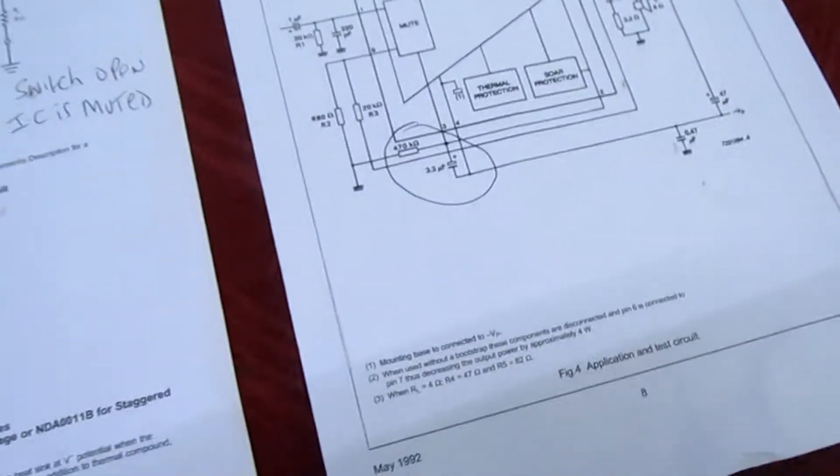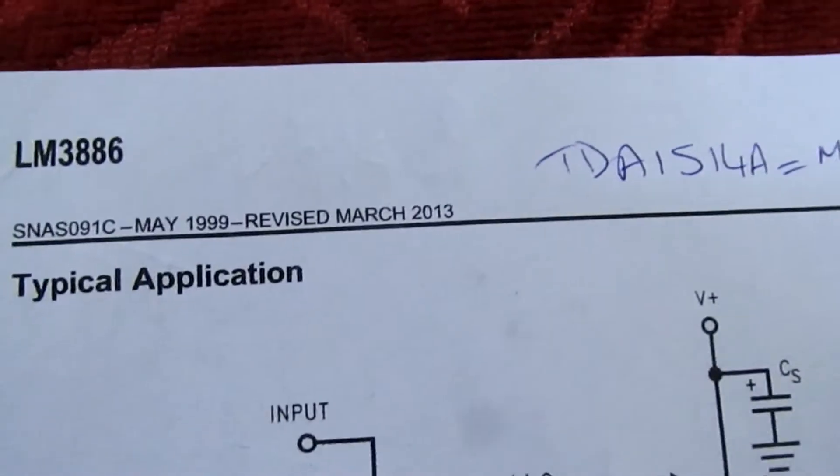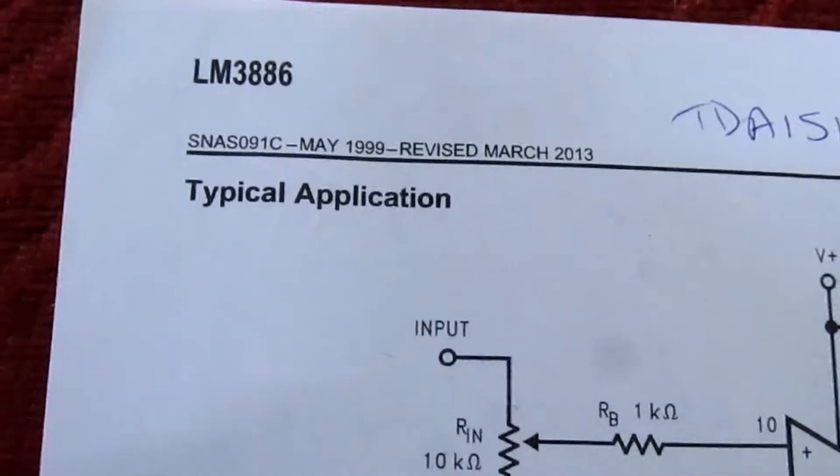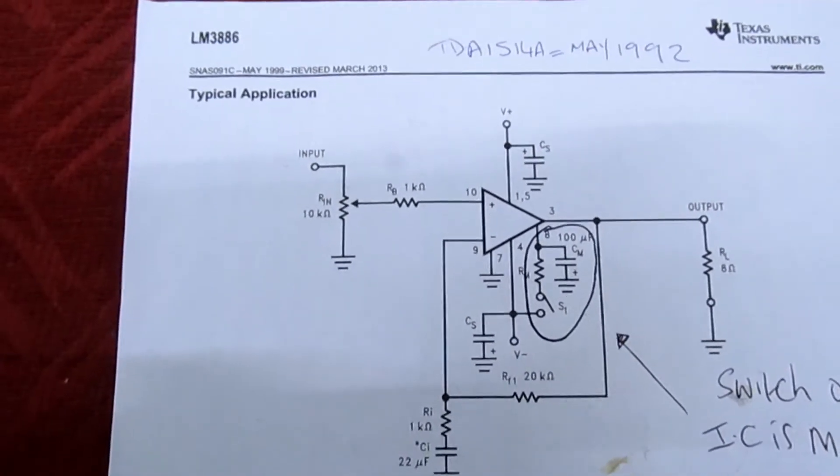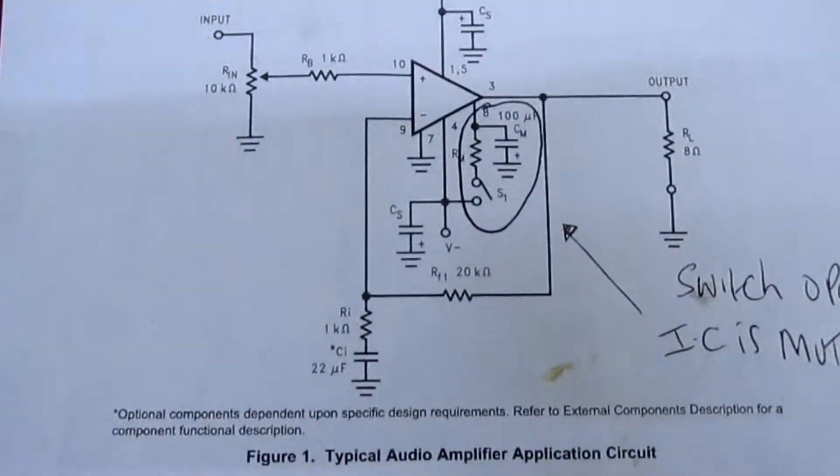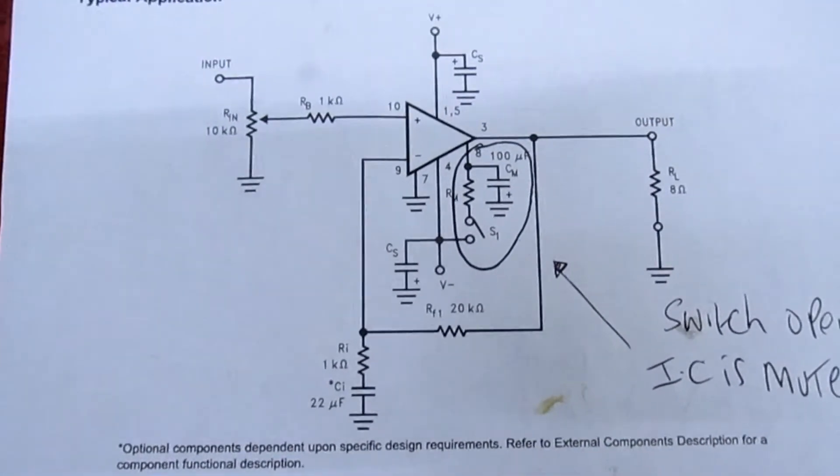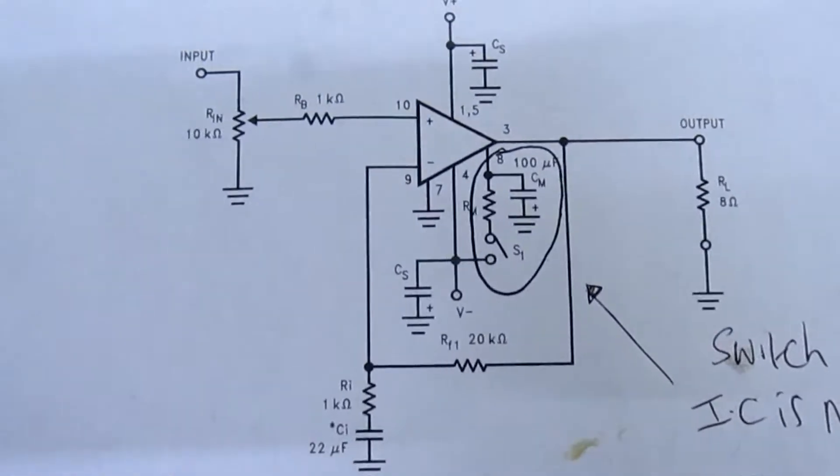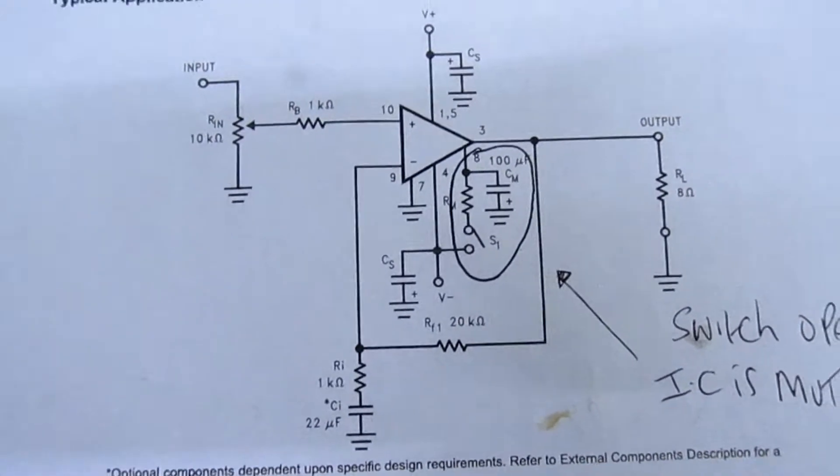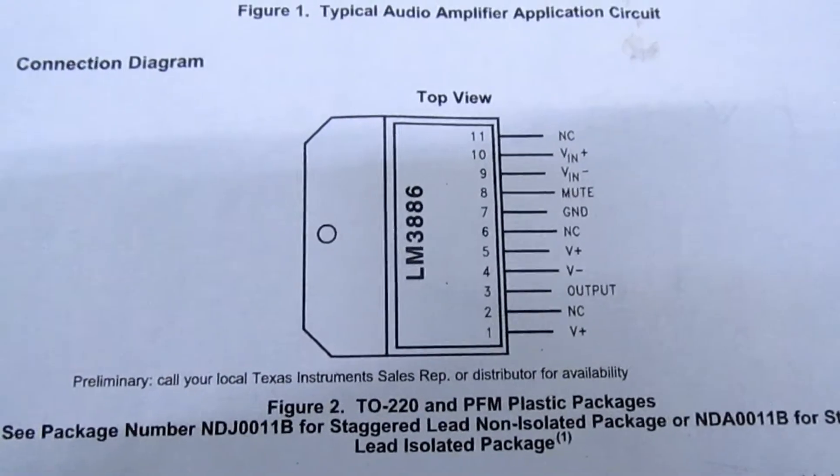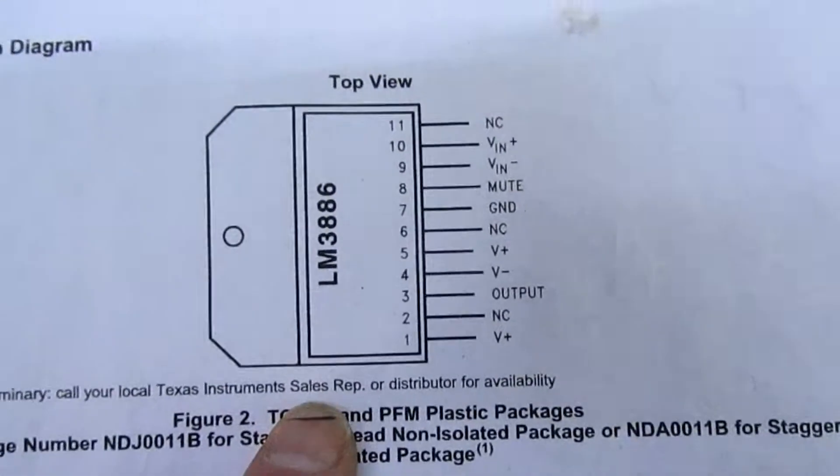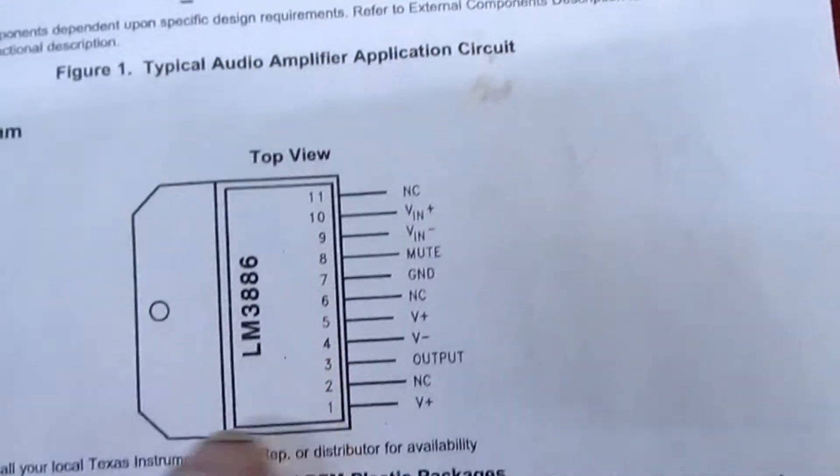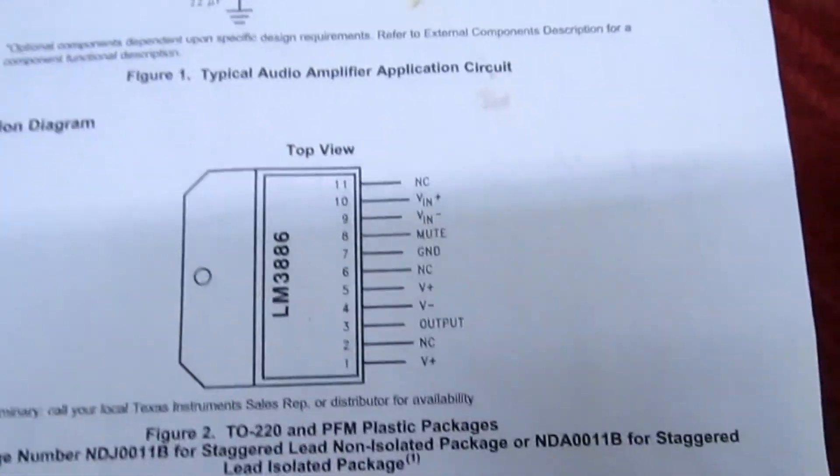The one I've picked is the LM3886 TF. I'm using the TF one which is the fully insulated one, because we don't need any mica washer behind it when we fasten it to the casing. Using a fully insulated one makes fitting a lot simpler. As you can see, it's in a completely different package and has a different leg configuration, so it won't fasten straight into the board.